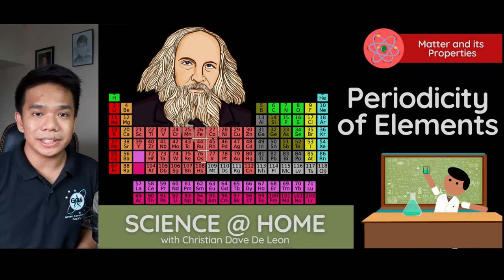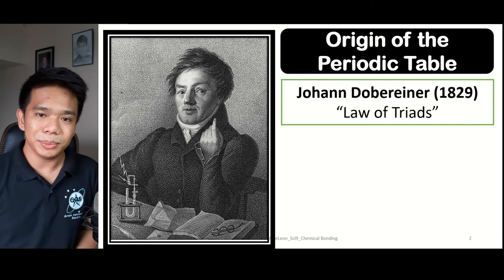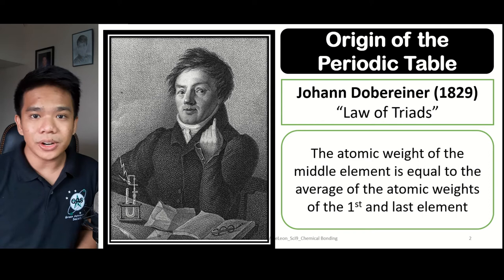It all began in 1829 when a German scientist named Johann Döbereiner formulated the Law of Triads, in which he grouped certain elements into triads wherein the average of the first and third element's atomic weight or atomic mass is equal to the atomic mass of the second element.